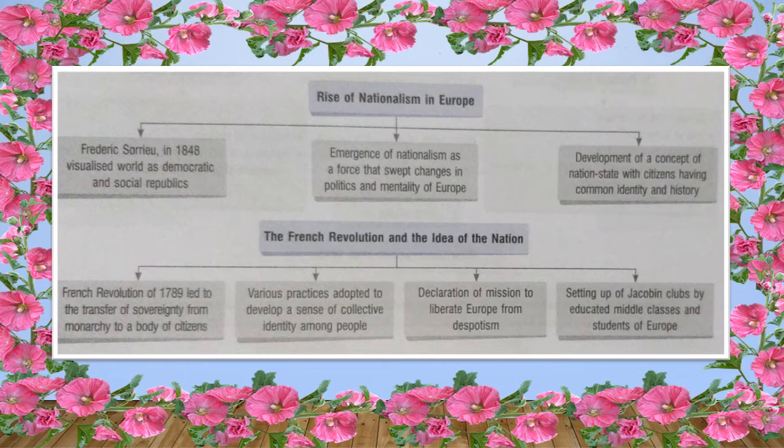When we spoke about the French Revolution and the idea of a nation, we did the French Revolution of 1789, which led to the transfer of sovereignty from the monarchy to a body of citizens. Various practices were adopted to develop a sense of collective identity among people, declaration of mission to liberate Europe from despotism, as well as setting up of Jacobin clubs by educated middle class and the students of Europe.